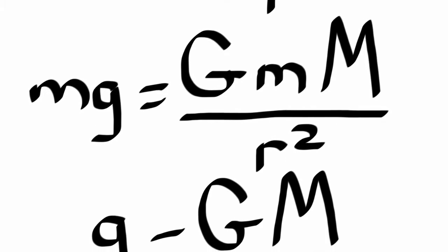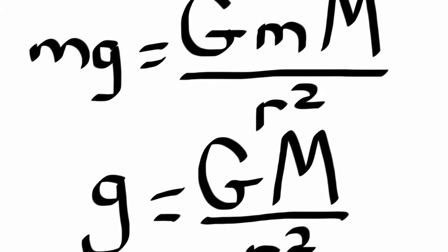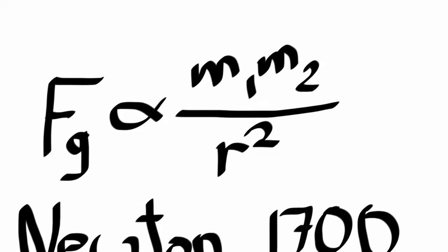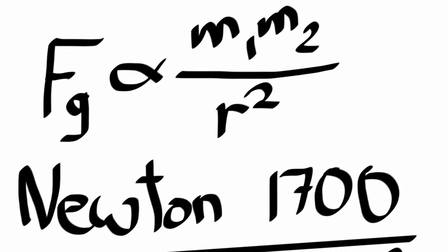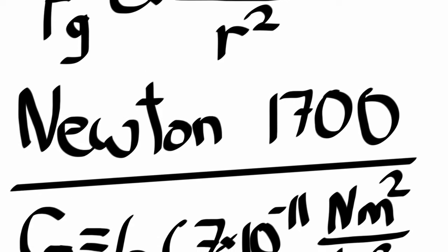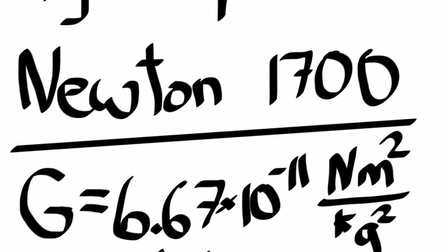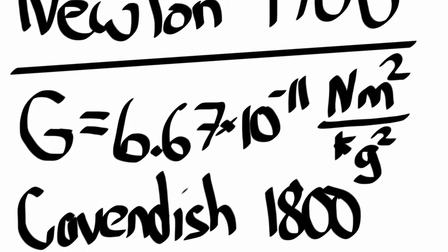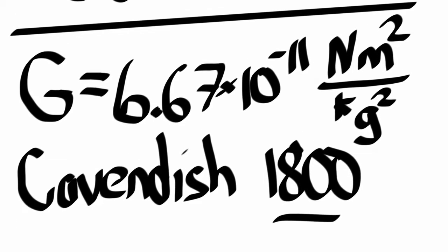And if you have the radius of Earth, and you can measure the gravitational field strength, and you have the gravitational constant, you can calculate the mass of the planet on which you're standing. Now, Newton came up with his law of universal gravitation just before 1700, but he didn't know that gravitational constant until Cavendish came along and was able to calculate that around 1800. So it's been 200 years we've known enough information to calculate the mass of Earth.